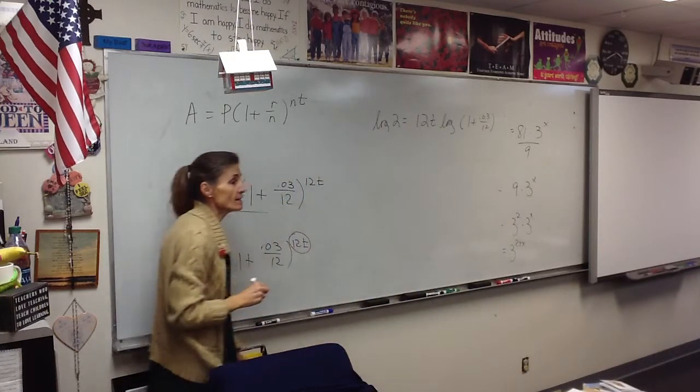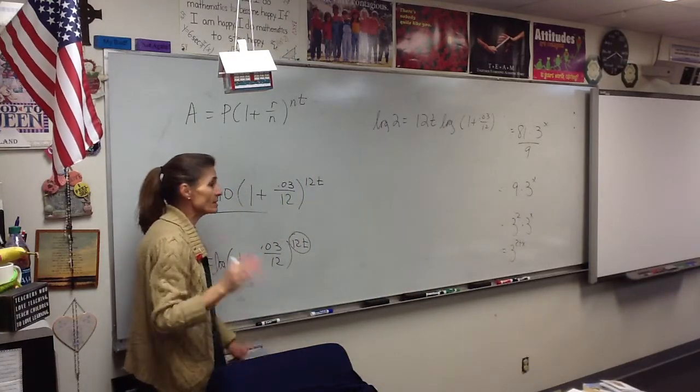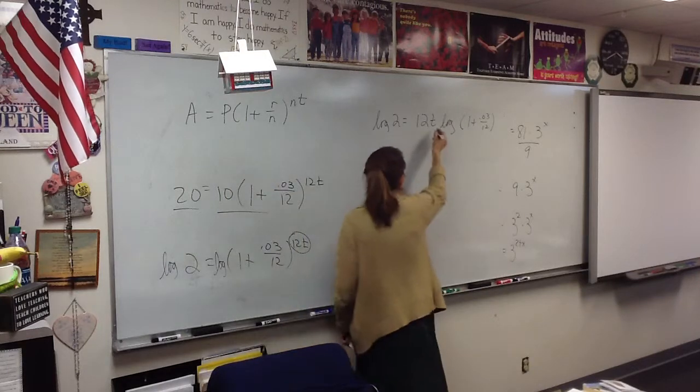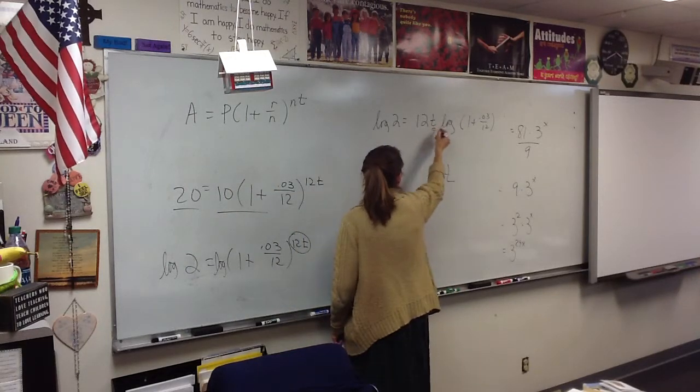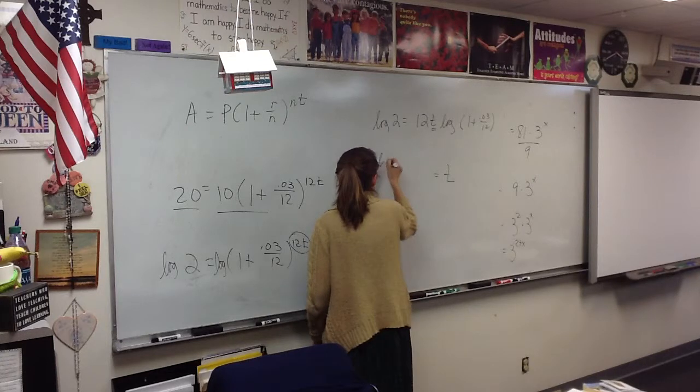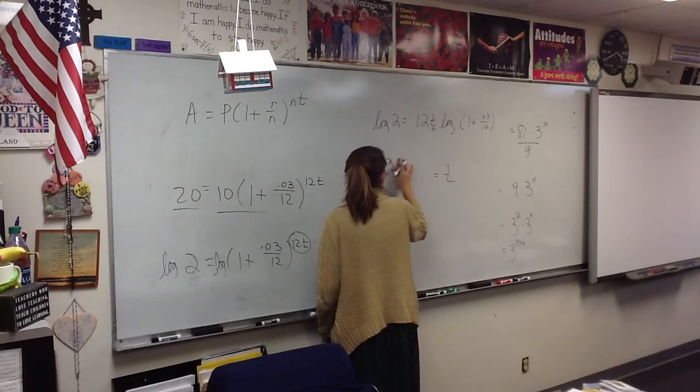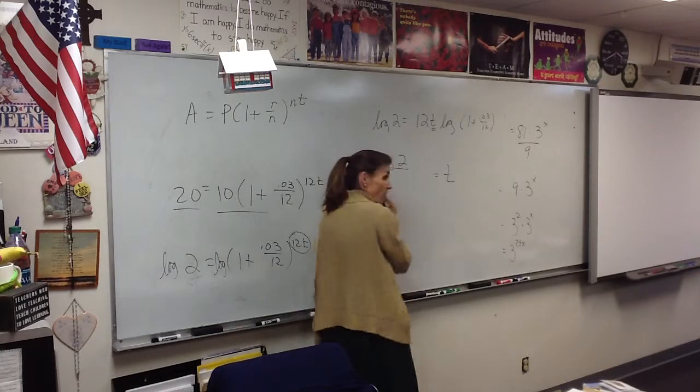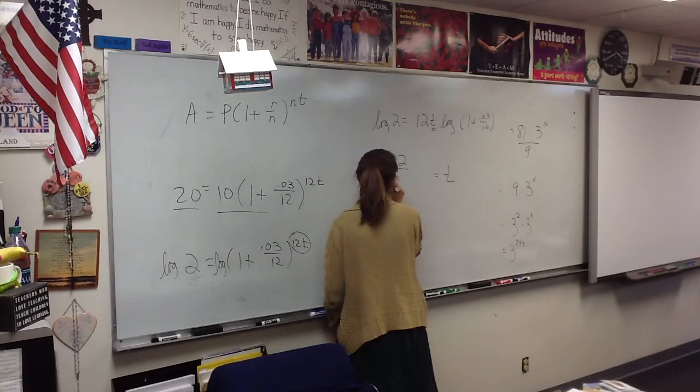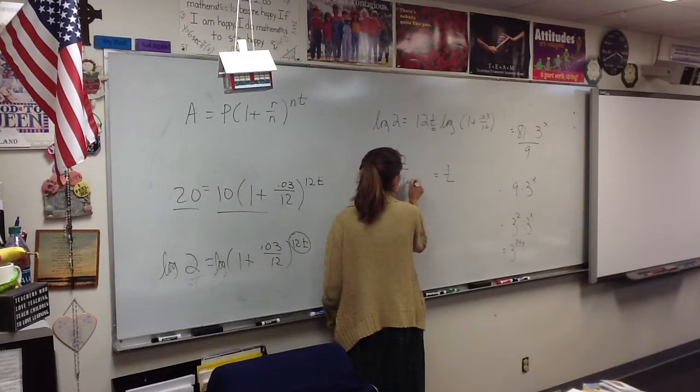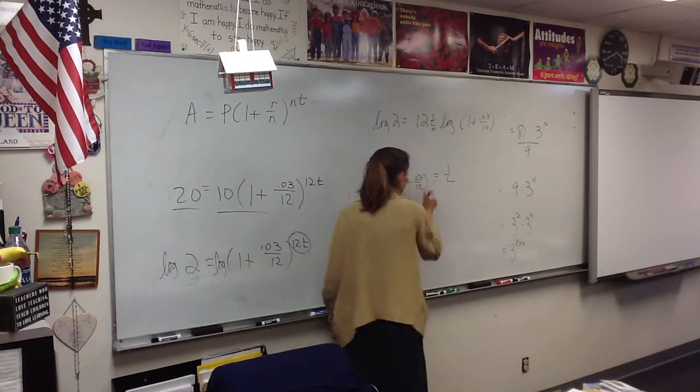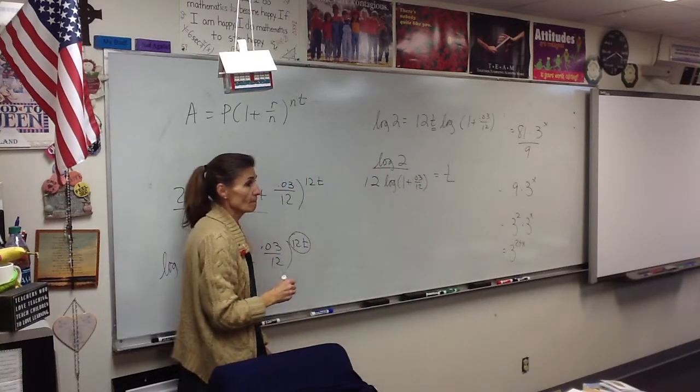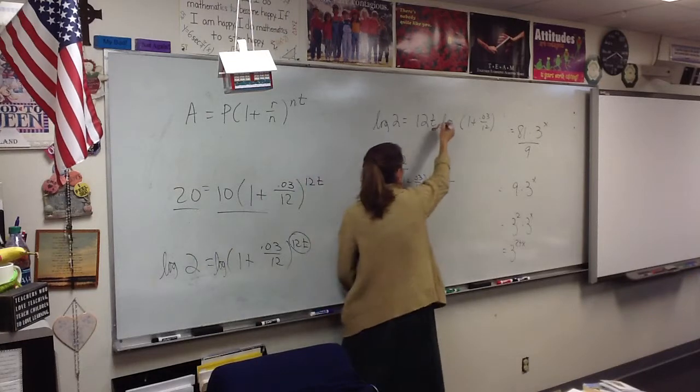Don't be frightened of that. Those are just numbers. It's no big deal. You want to solve for T. So, what are we going to have to do? How are we going to get T by itself? We're going to take the log of 2 and do what with it? Divide. Divide it by 12T log and by the log of 1 plus 0.03 divided by 12.